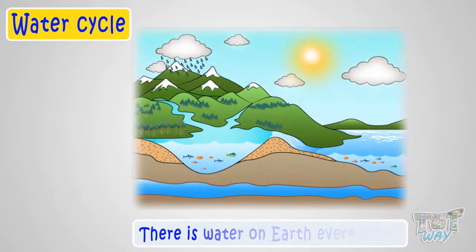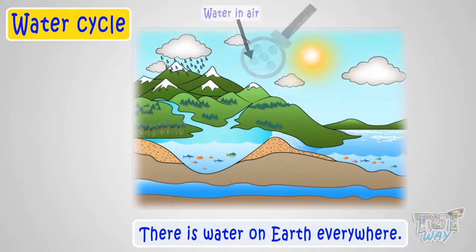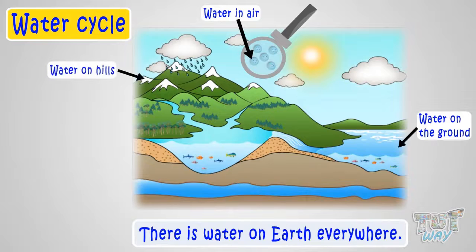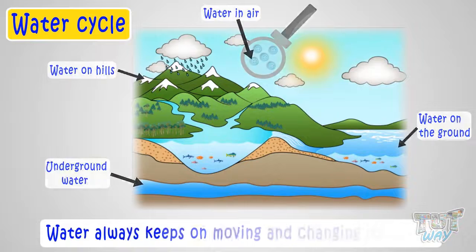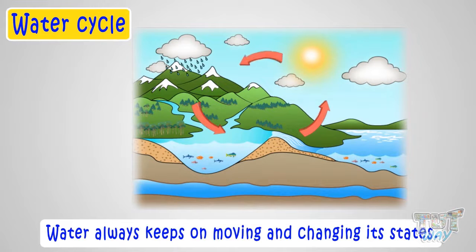There is water on earth everywhere! In the air, on the ground, on hills, under the ground too. But this water always keeps on moving and changes its states. That is, liquid keeps on changing into water vapors, to ice, and ice again to water.